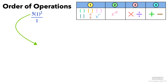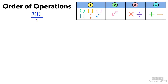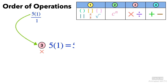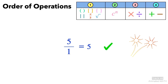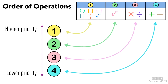Now we can evaluate the exponent. 1 squared is equal to 1. You can perform same-level operations at any given step and always prioritize the higher-level operations over lower-level ones. The best way to confirm your answers is to follow the order of operations in mathematics.